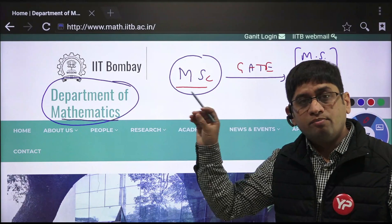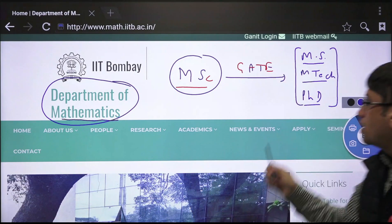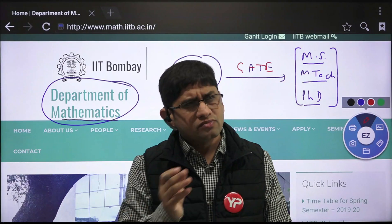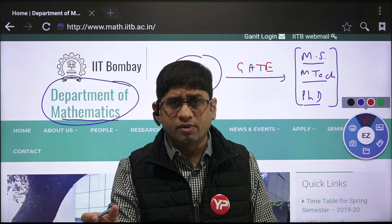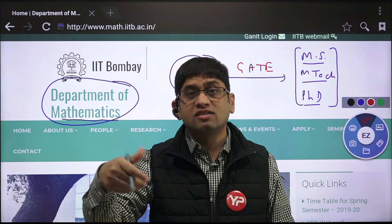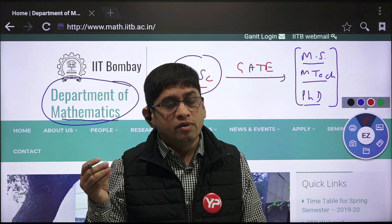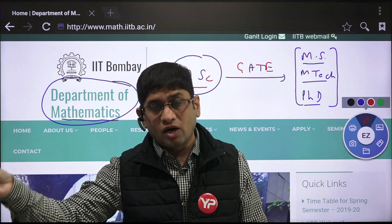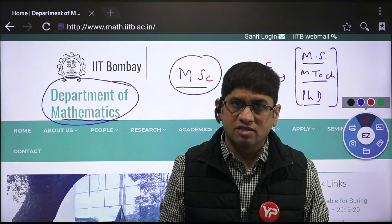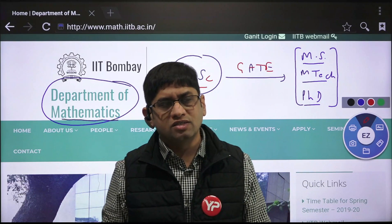This video is for basic science students — mathematics, physics, chemistry, biology — if you have appeared for GATE and have a valid GATE score, you can get into MTech, MS, and PhD courses, not only in your core branch department but in other departments as well. For example, I'm going to upload a video on the energy science department at IIT Bombay, where students from physics, chemistry, biology, and mathematics are eligible to join the MTech course. Similarly, the aerospace department and many other such departments are available.